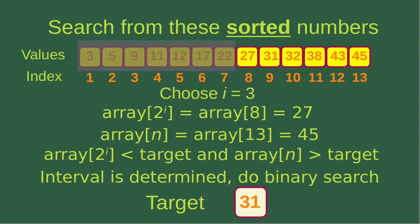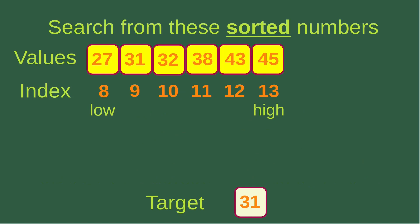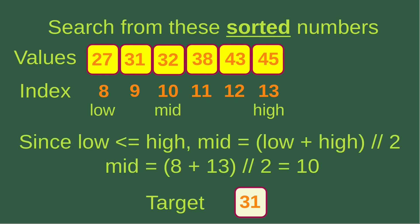Why am I so confident? Because the left-hand element is smaller than the target, and the rightmost element, which is 45, is larger than the target, which is 31. Now we pick up that particular interval to do the binary search for the target 31. First we have to set up the low and high indices. The low index corresponds to the left-hand element and the high index corresponds to the rightmost element. Since the low index is smaller than or equal to the high index, I can find out the mid-index using the formula, and I find that the mid-index is equal to 10.